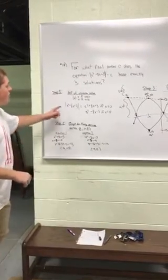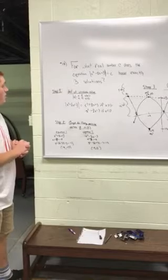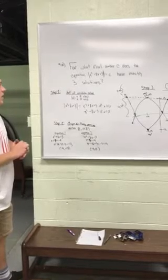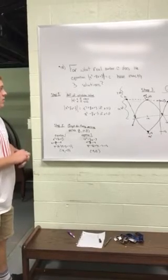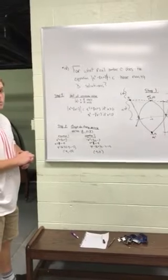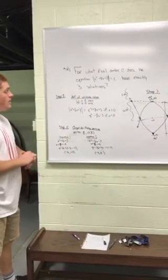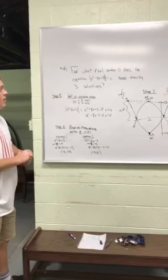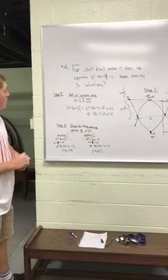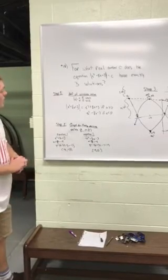So for the absolute value of this equation, x squared plus 8x plus 3, it would equal x squared plus 8x plus 3 if x is greater than or equal to 0, and negative x squared minus 8x minus 3 if x is less than 0.